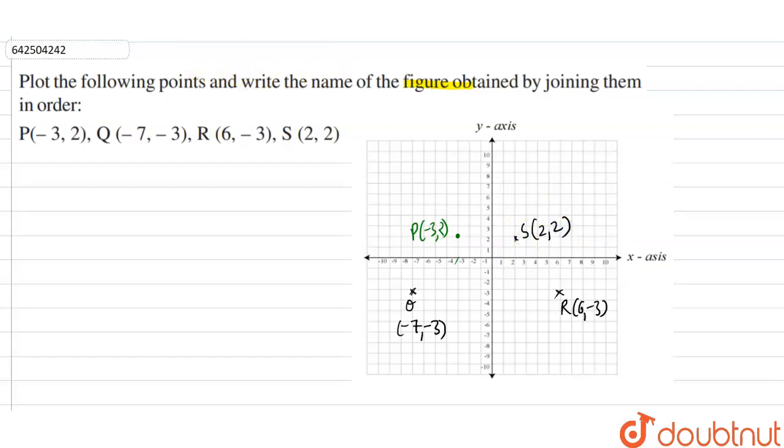Now, let's join all these points. We are joining these points. P, Q, Q, R, then R, S, and P, S.